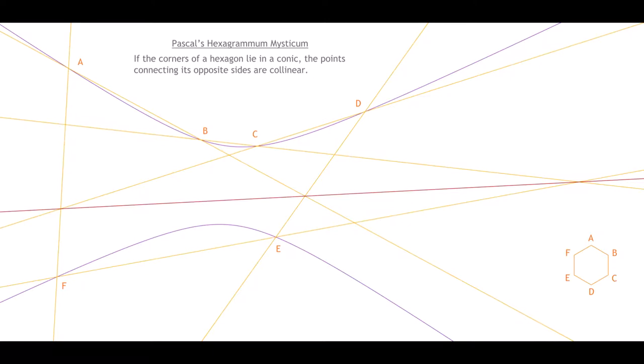That is the line shown here in red, known as the Pascal line. Only as Gergonne was propounding the law of polarity, did anyone formulate Pascal's theorem in morphological terms and find the polar theorem, namely Brianchon, 166 years after Pascal's hexagon theorem.